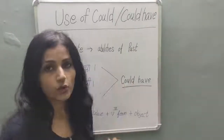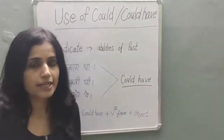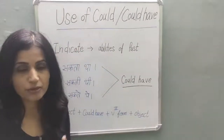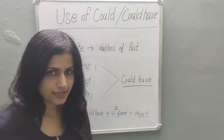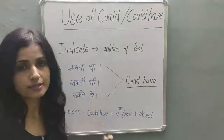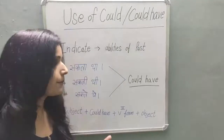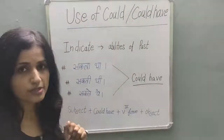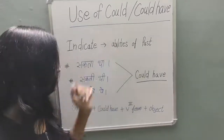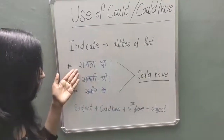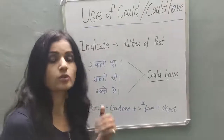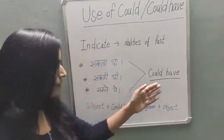Second, we have 'could have'. 'Could have' means our past is done — it was possible but didn't happen. When you finish the sentence in Hindi, it ends as 'Ho sakta tha', 'Ho sakti thi', 'Ho sakte the' — meaning 'it was possible'. In the past, we use 'could have' to show this. The Hindi translation ends with 'it was possible', and here we use 'could have'.